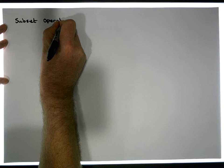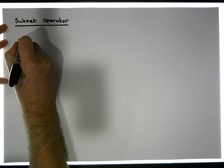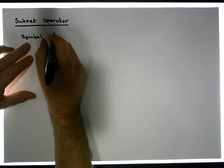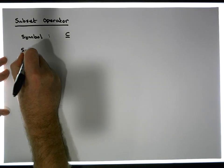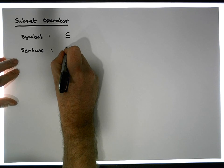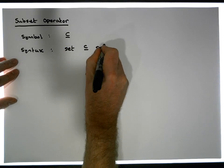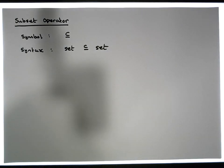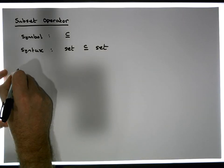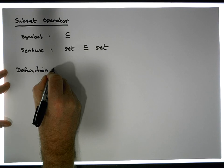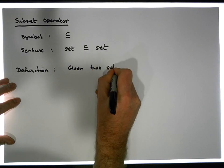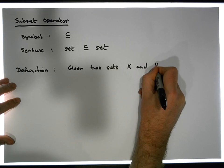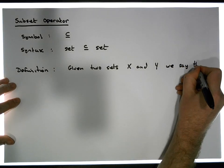The subset operator — and we're not talking about proper subsets here, just the subset operator — its symbol looks something like this. Its syntax: it takes a set on the left-hand side, followed by the operator, followed by another set. So given two sets X and Y, we say that X is a subset of Y when...